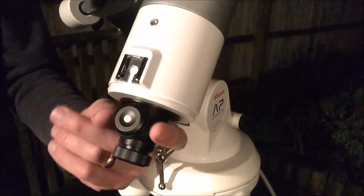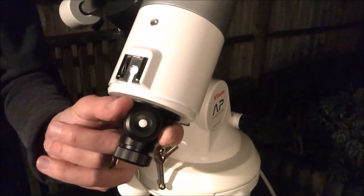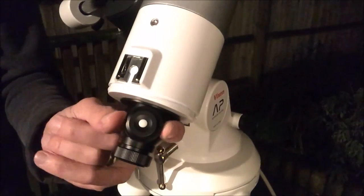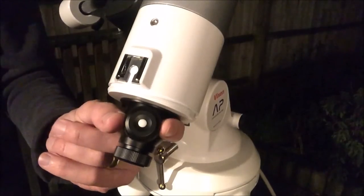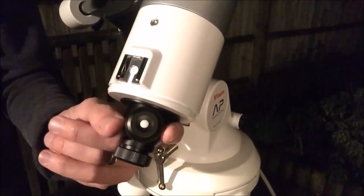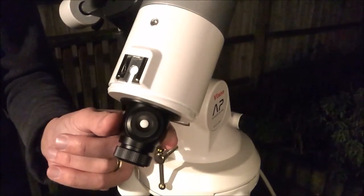The Polar Scope reticule can be adjusted in brightness to eight different brightness levels using this knob here. That's a good feature, something you use during the alignment process where the star 51 Cepheus is quite faint compared to the other two stars.